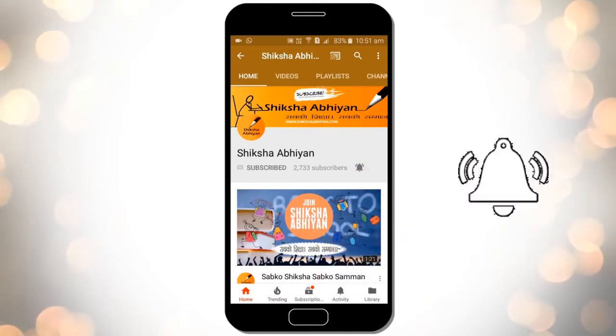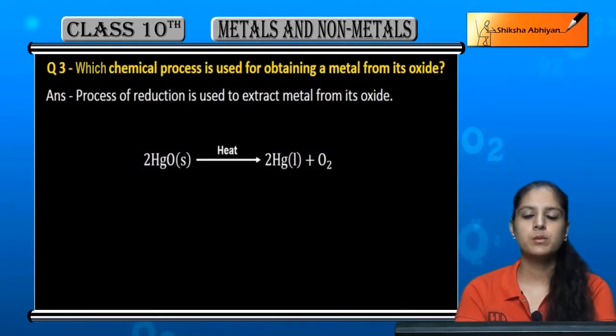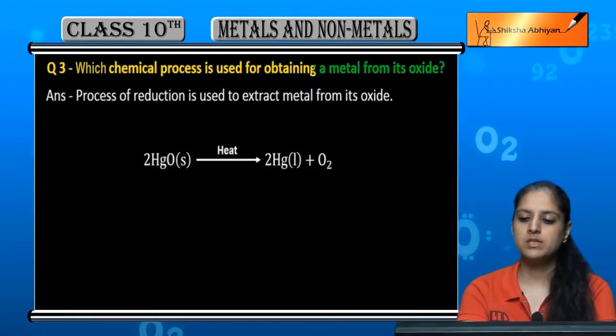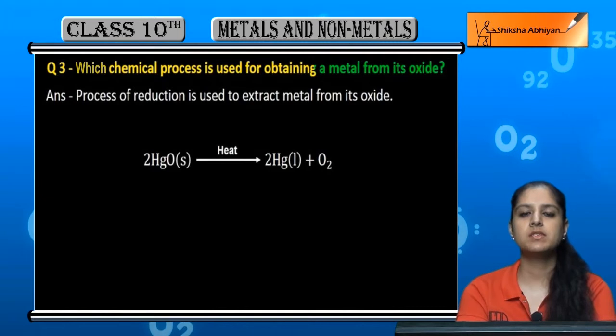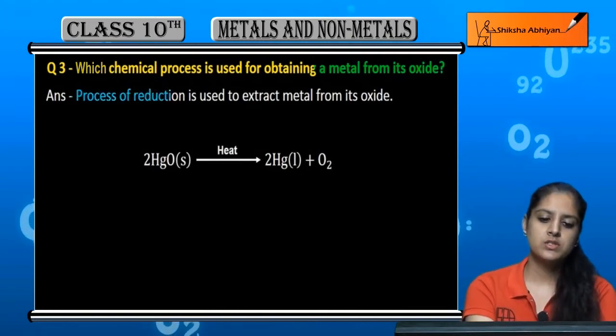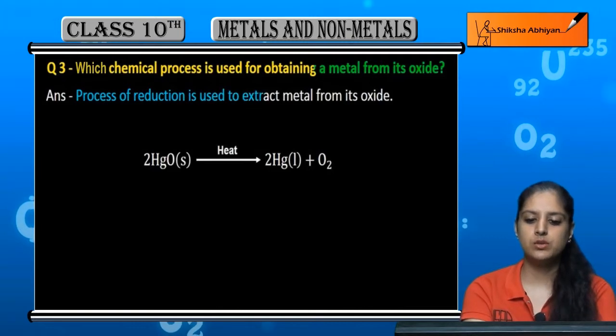Which chemical process is used for obtaining a metal from its oxide? The extraction process of reduction is used to extract metal from its oxide.